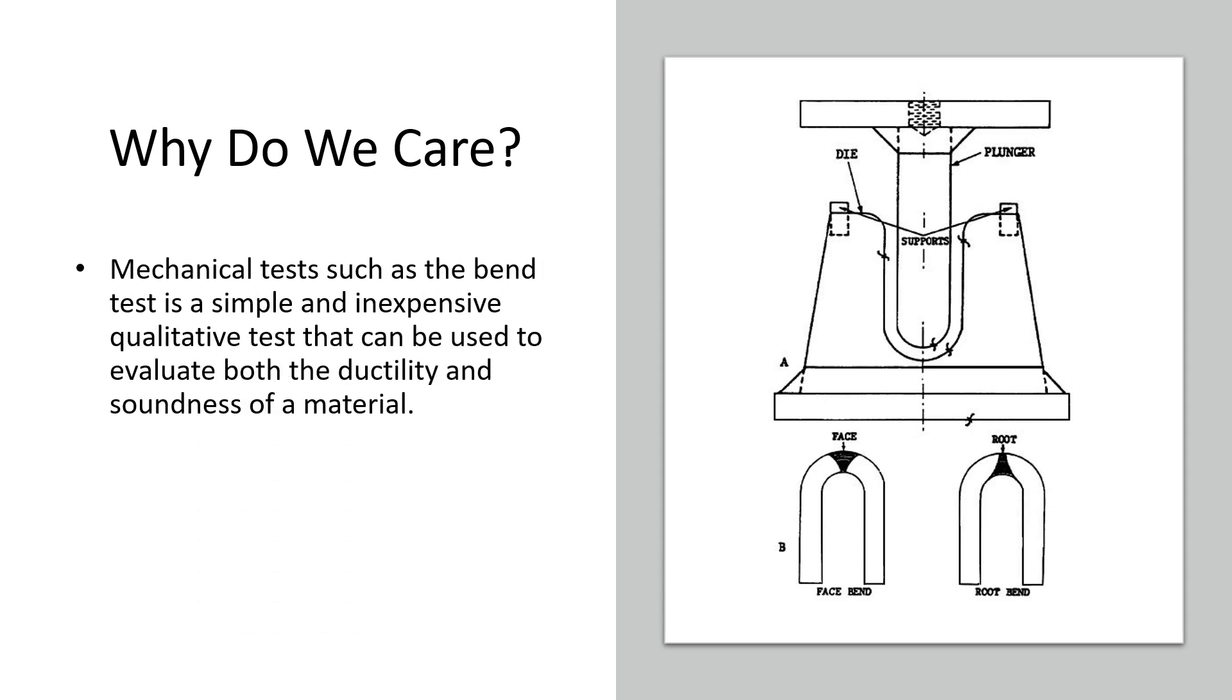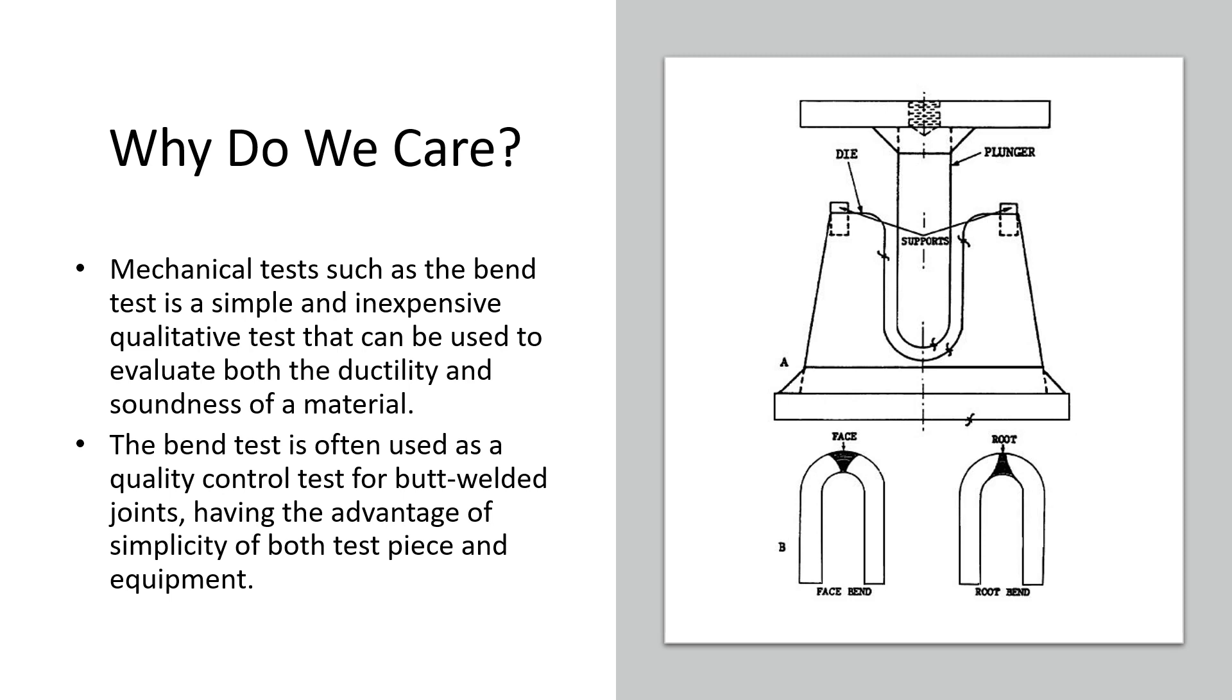Why do we care? Mechanical testing such as a bend test is a good way to destructively test a test coupon for welding. It's inexpensive but also gives you numbers so you can evaluate the ductility and soundness of the material. The bend test is used to qualify welders and ensure that welded joints have the required ductility. This is where you'll run into this in industry if you cross paths in the welding universe.